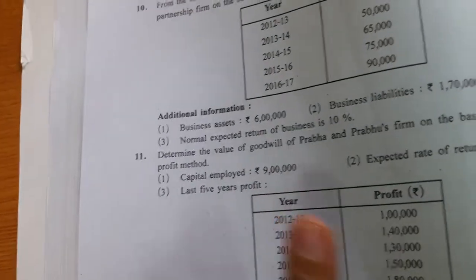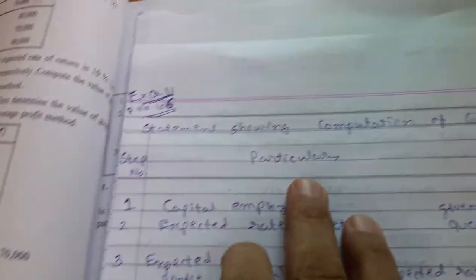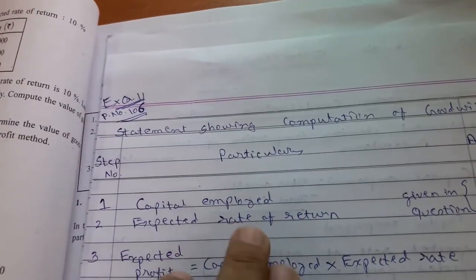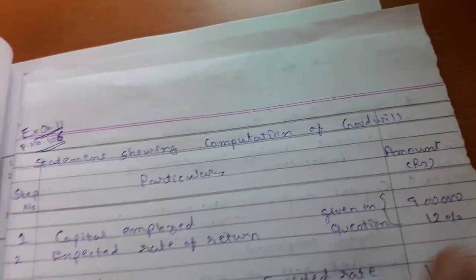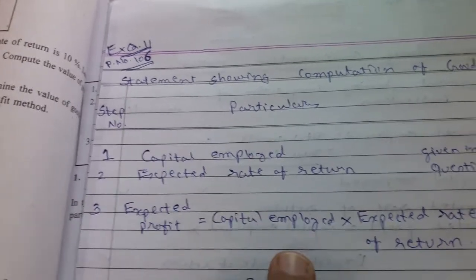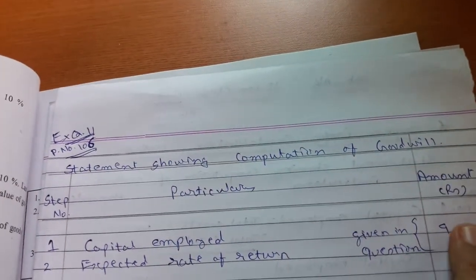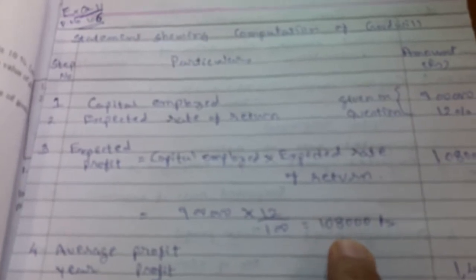Now prepare the statement showing computation of goodwill with step number, particulars, and amount in rupees. Step 1 — capital employed: clearly given in the example as 9 lakh, so write that straight down. Step 2 — expected rate of return: given in the question as 12%, so write that down. Step 3 — expected profit: formula is capital employed multiplied by expected rate of return, so 9 lakh × 12% = 9,00,000 × 12/100 = 1,08,000.